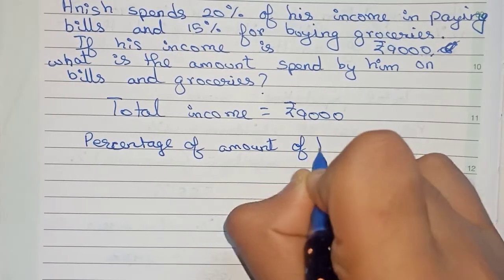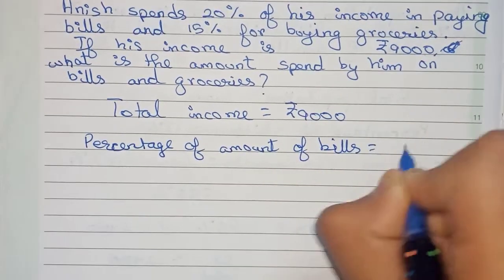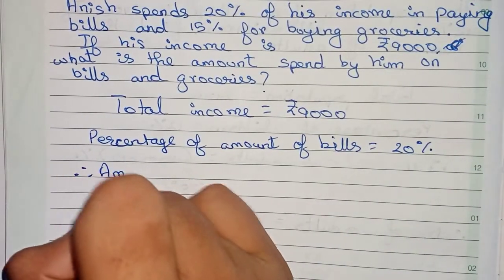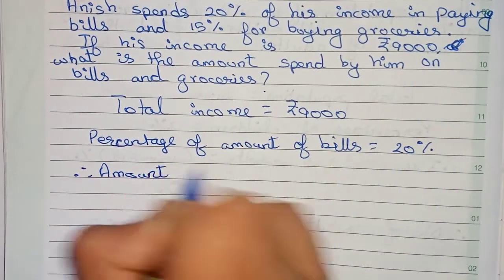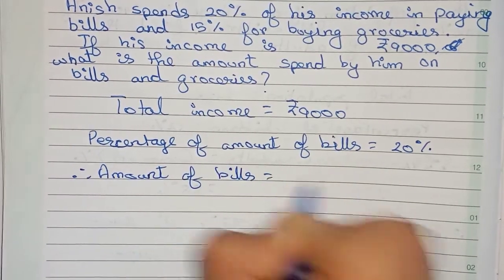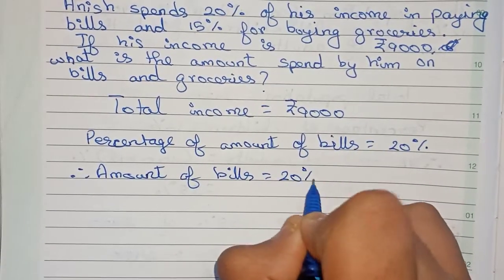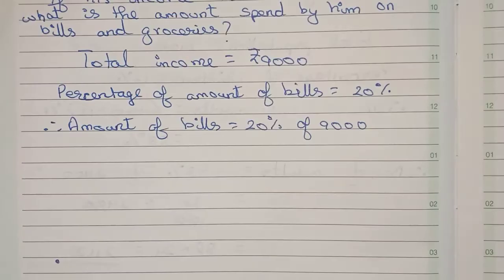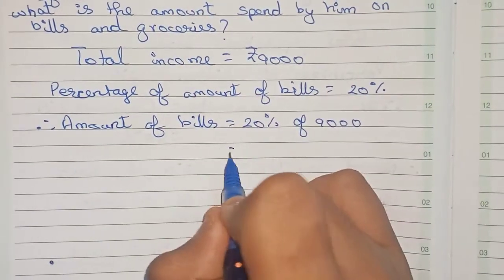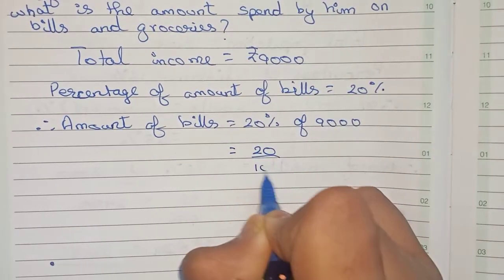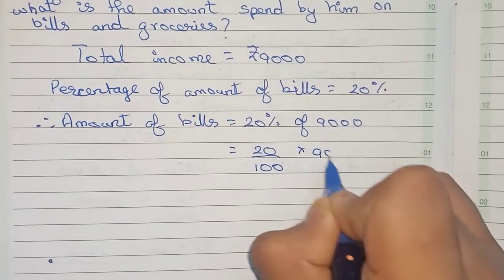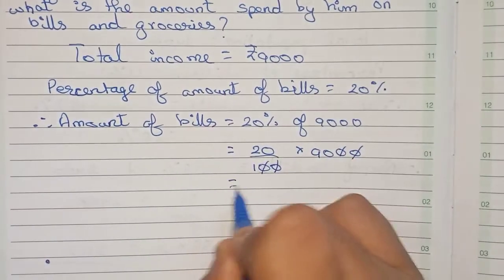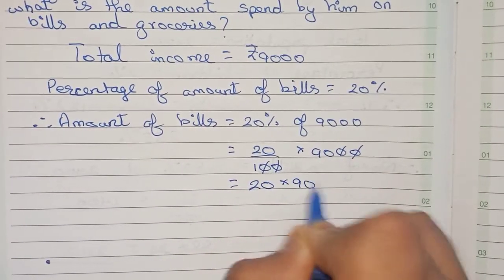Therefore, amount of bills equals to, now you find out, so that will be 20% of 9,000. So 20% we write as 20 by 100 into 9,000.